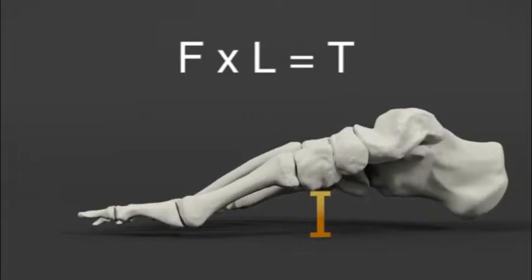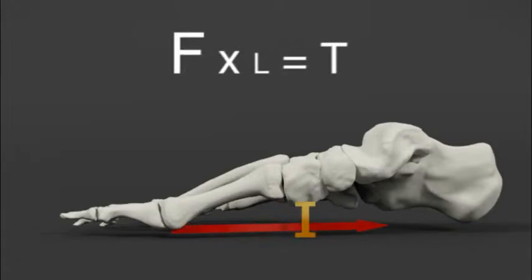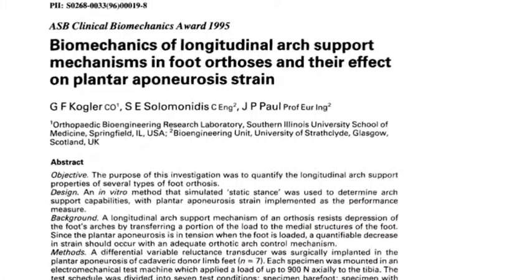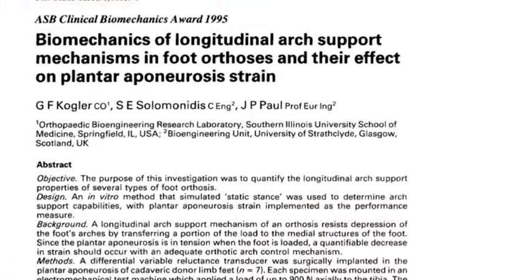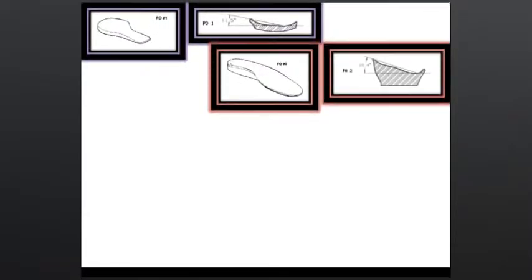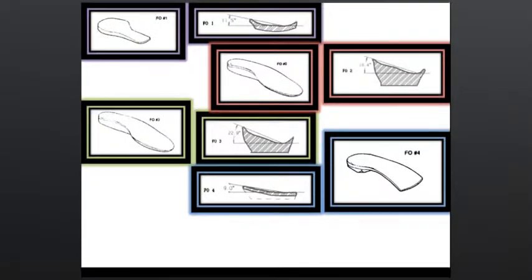As the foot collapses, that perpendicular distance decreases. To get the same work out of the plantar fascia with the decreased lever arm, you have to increase the force applied to the plantar fascia. This was proven in the Gesa Kogler 1995 cadaveric study, where he inserted a tensile stretch meter into the fascia and compared orthotics of various arch heights in a simulated gait cycle.